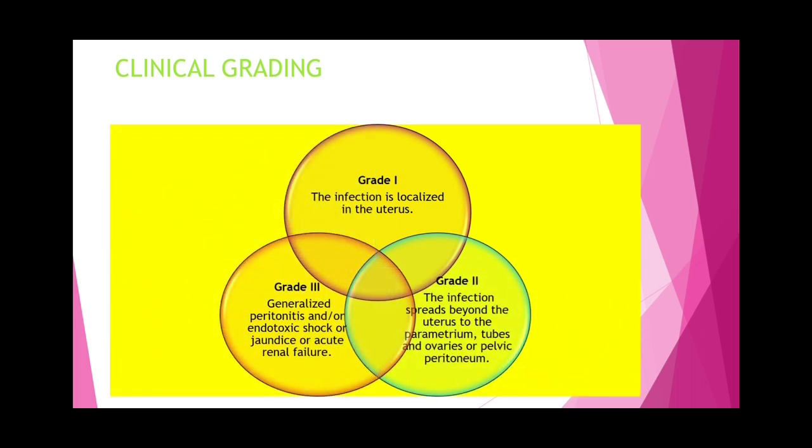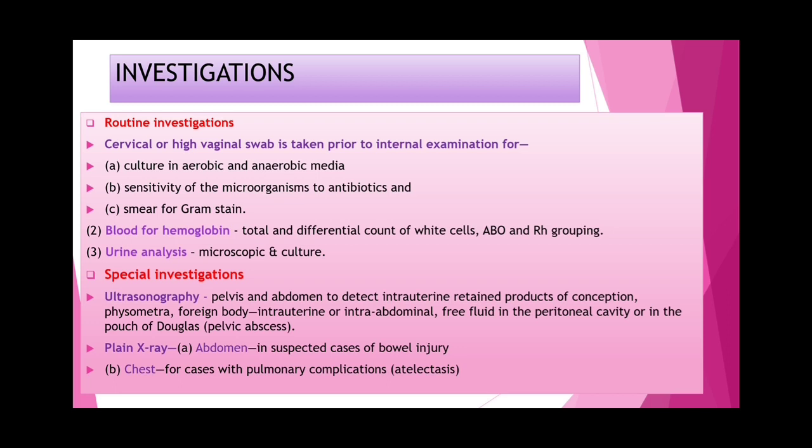Clinical grading: Grade 1 — infection localized to the uterus. Grade 2 — infection spread beyond the uterus to the parametrium, tubes, ovaries, or pelvic peritoneum. Grade 3 — generalized peritonitis with possible endotoxic shock or jaundice.